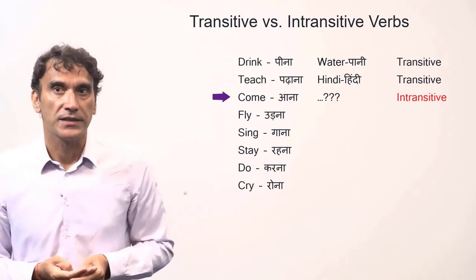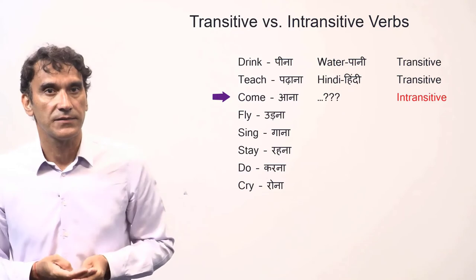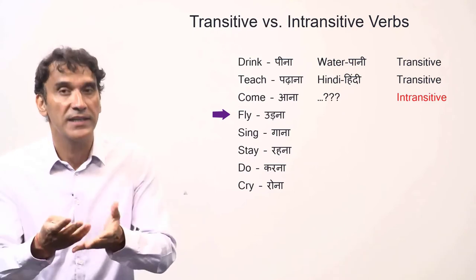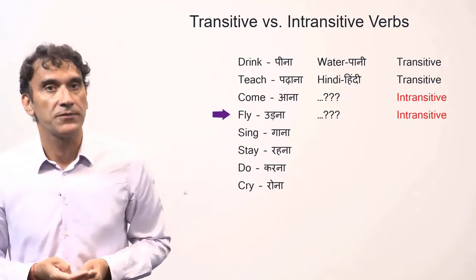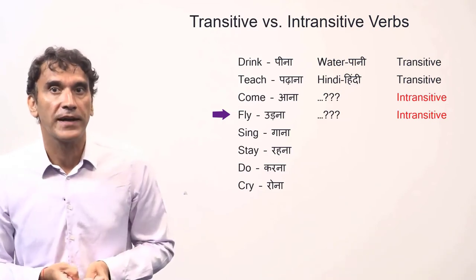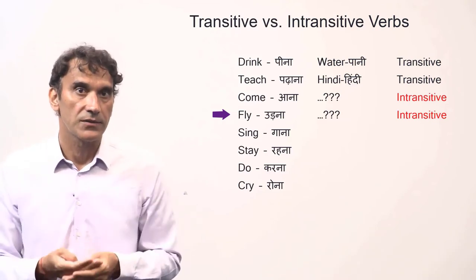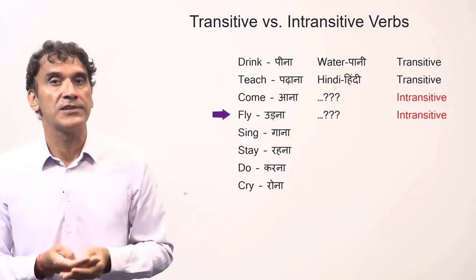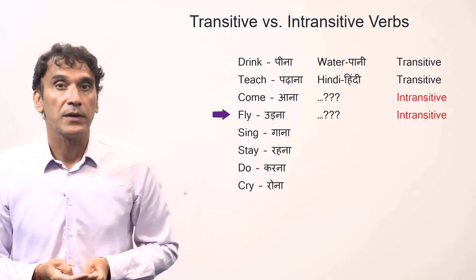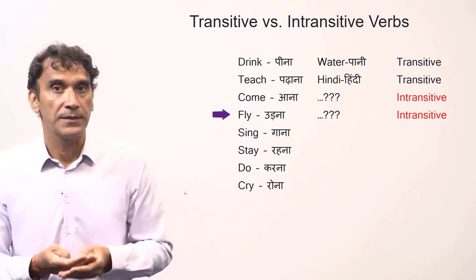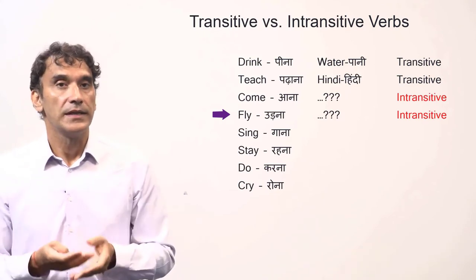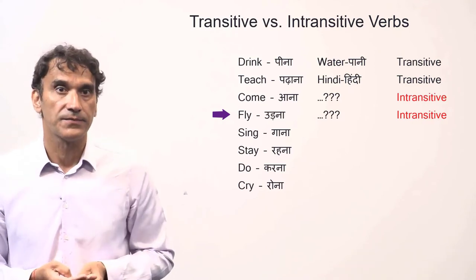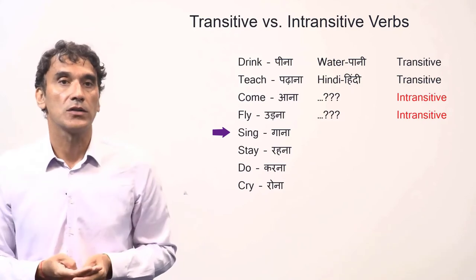'Come' (aana) — 'come what?' does not make sense, the question 'what?' does not apply here, so the verb 'come' is intransitive. 'Fly' (urna) — in Hindi, urna means to fly in the meaning of a bird flying or a plane flying; it is always intransitive. In English, 'fly' can be both: intransitive when a bird is flying, but transitive when meaning 'to fly a plane.' In Hindi, urna is always intransitive.